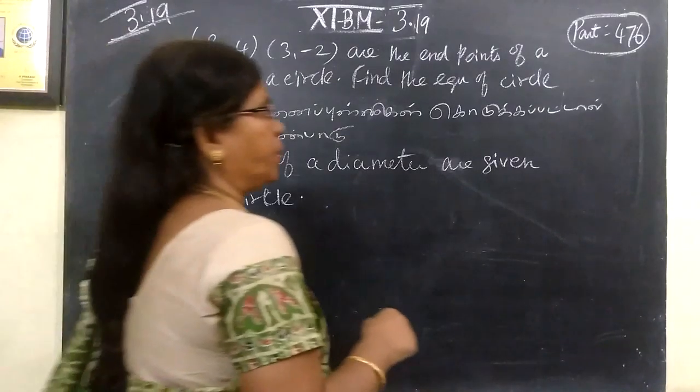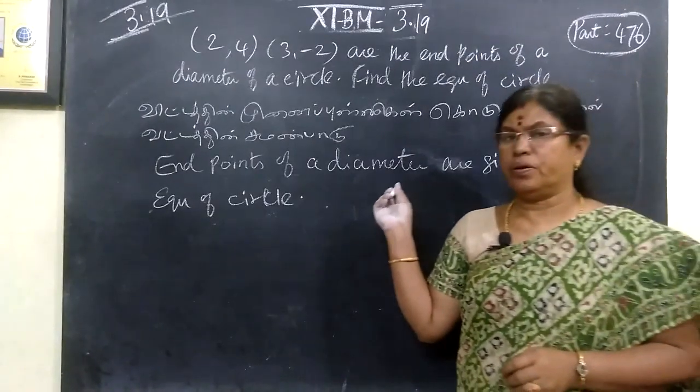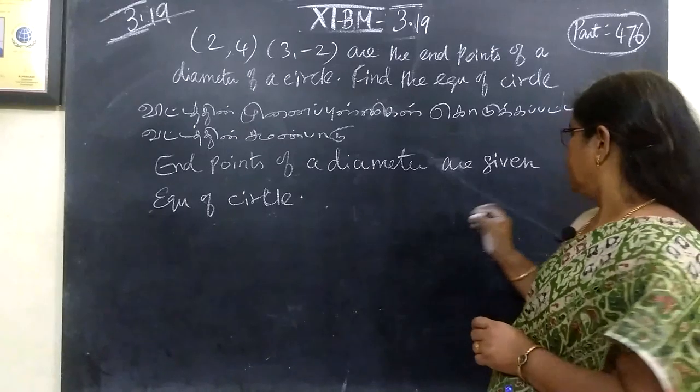So next on the example 3.19, 11th business math, you are given the end points of the diameter of the circle and we want to find the equation of the circle.